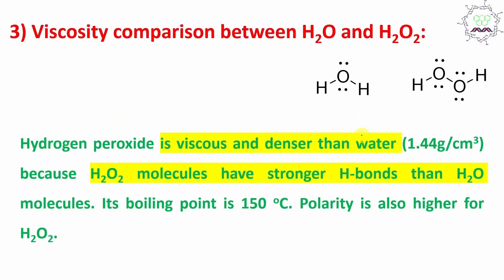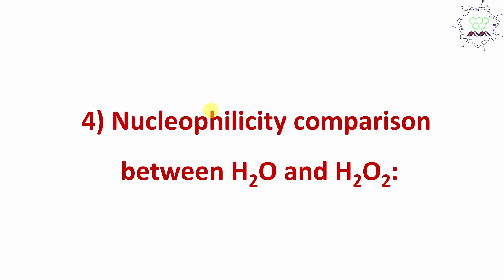Now let us go to the viscosity comparison. Similar to boiling point, the viscosity of hydrogen peroxide is also higher. Even its density is higher — 1.44 g/cc for H2O2 compared to nearly 1 g/cc for water. Similar to boiling point, polarity and the side effects also follow the same trend for viscosity.